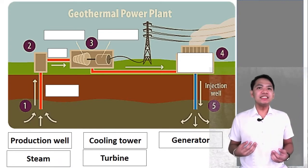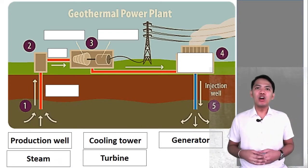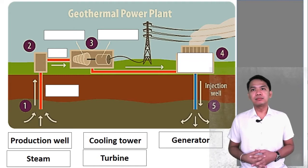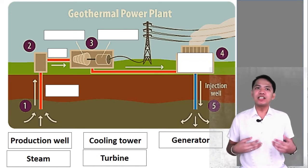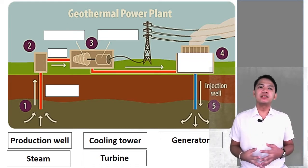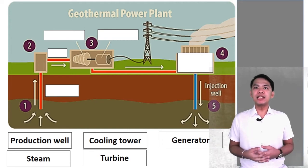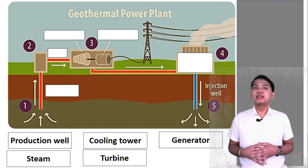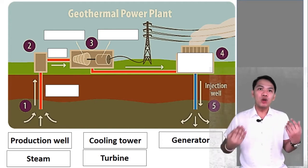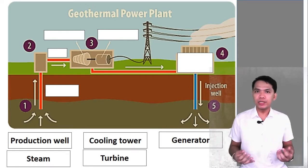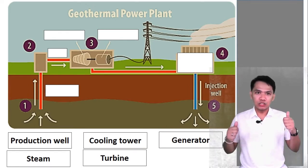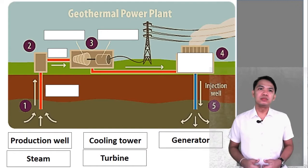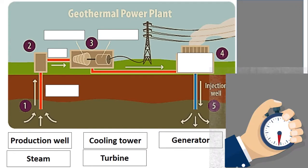We are going to identify the different parts of geothermal power plants. This is the basic diagram of the geothermal power plant. Below is the list of its parts, and you are going to place them in their proper places. I'm going to give you 30 seconds to do it. Are you ready? Go!